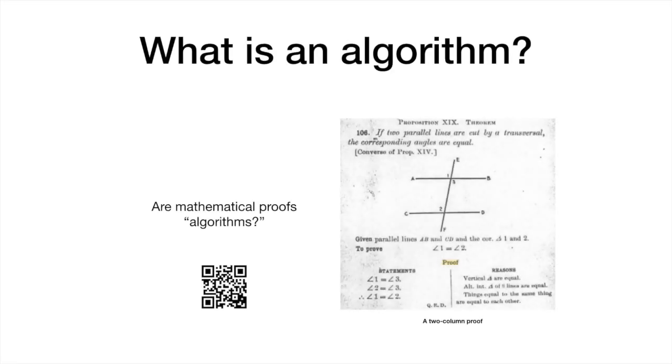Computers cannot solve problems informally. They must be programmed with specific sets of instructions in order to solve a problem. These sets of instructions are called algorithms. So what is an algorithm?